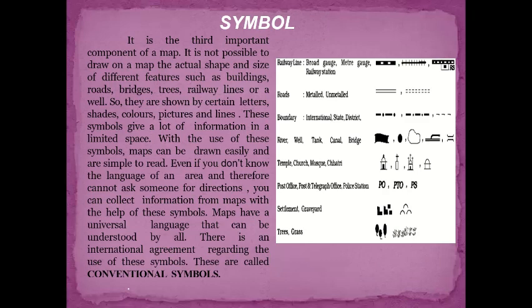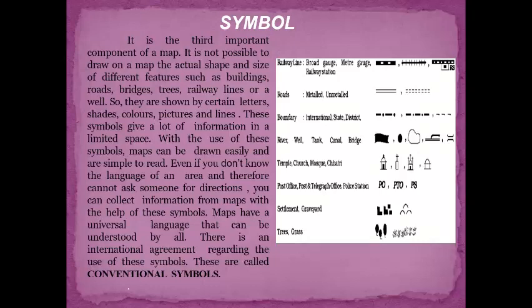Symbol: Symbols are the third important component of a map. It is not possible to draw on a map the actual shape and size of different features such as buildings, roads, bridges, trees, railway lines, or a well. So they are shown by certain letters, shades, colors, pictures, and lines. These symbols give a lot of information in a limited space. With the use of these symbols, maps can be drawn easily and are simple to read. Even if you don't know the language of an area, you can collect information from maps using these symbols. Maps have a universal language that can be understood by all, and there is an international agreement regarding their use. These are called conventional symbols.